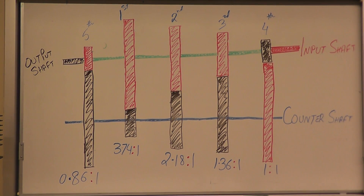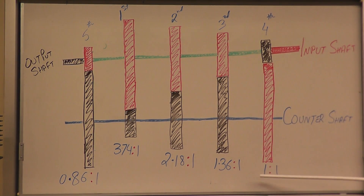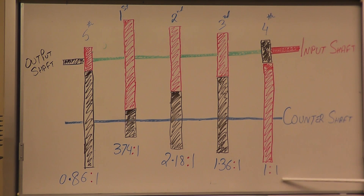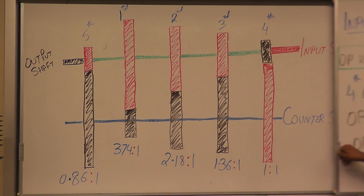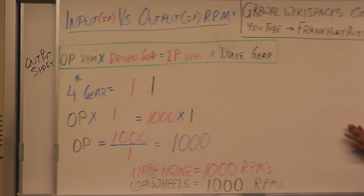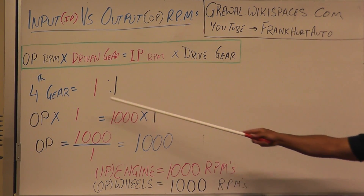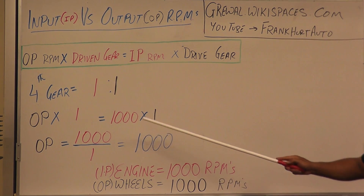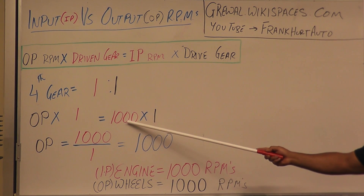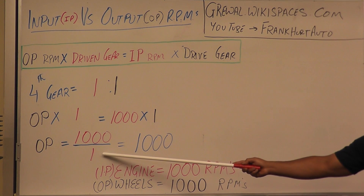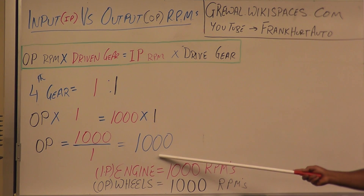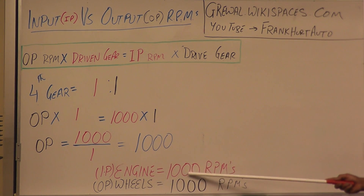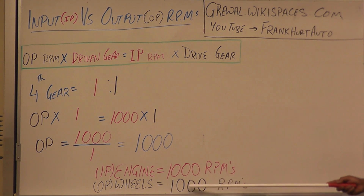For fourth gear — the simplest one — the gear ratio between driven gear and drive gear is 1 to 1. Plugging that into our formula: fourth gear, one to one. Engine is still running at 1,000 RPMs. When you solve the equation, you get 1,000.